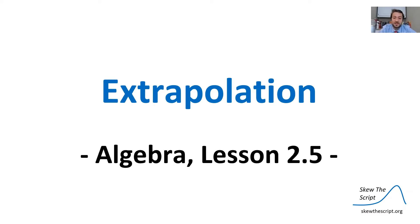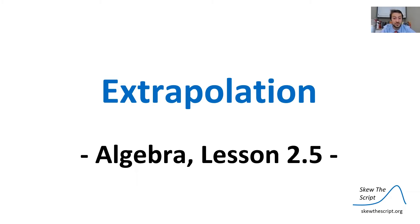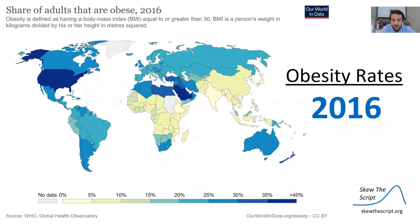Welcome to Algebra Lesson 2.5 in our Skew the Script series. Today we'll be discussing extrapolation. Here's a global map of the obesity rates in 1975 — you can see all the various countries. Lighter colors mean less obesity prevalence, darker colors mean more obesity. If we compare this to 2016, we see an alarming trend: there are much darker colors in 2016 versus 1975.